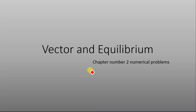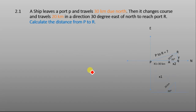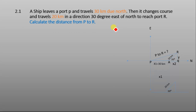Vectors and equilibrium, chapter 2, numerical problems. Problem 2.1: A ship leaves port P and travels 30 kilometers due north, then changes course and travels 20 kilometers in a direction 30 degrees east of north to reach port R. Calculate the distance from P to R.